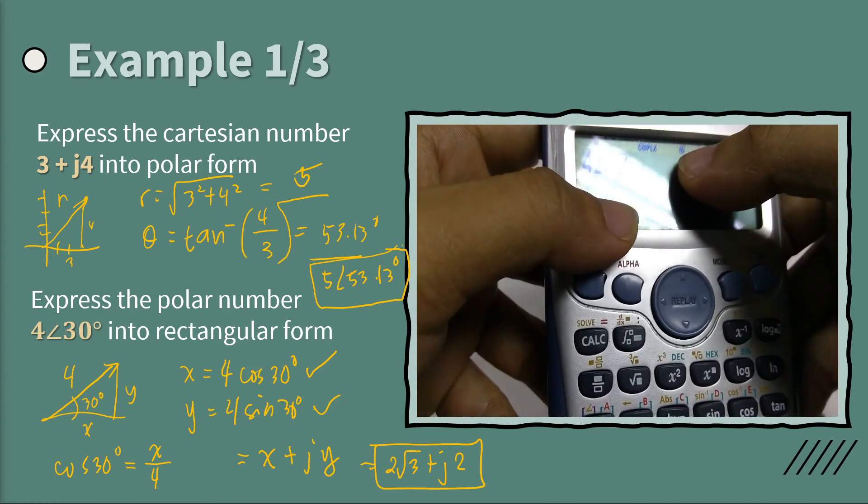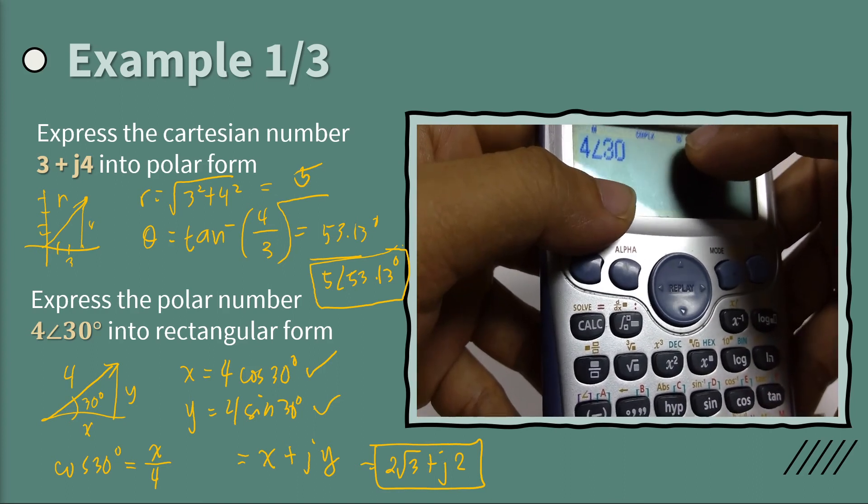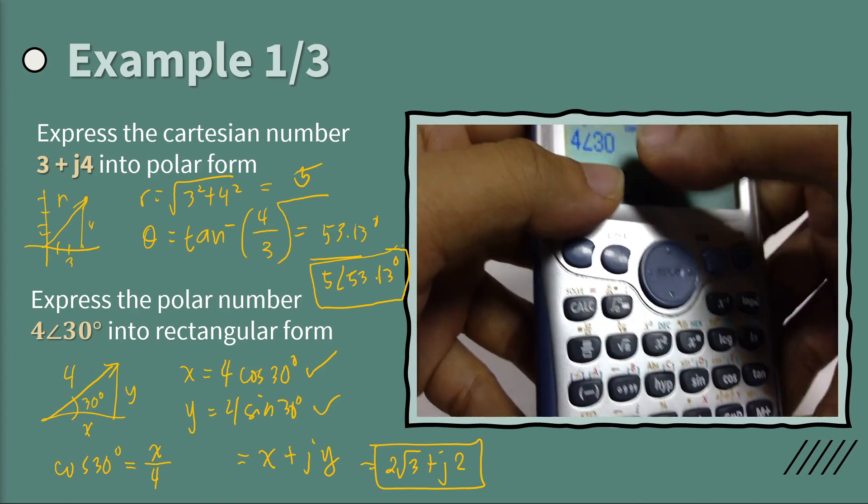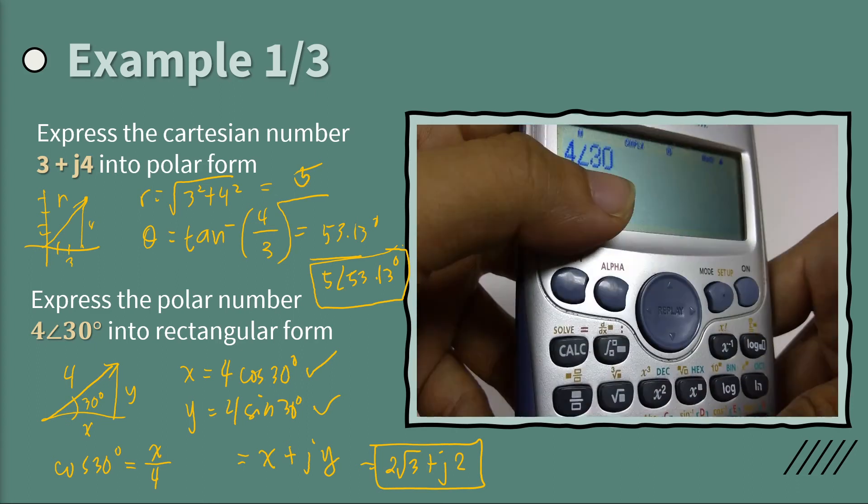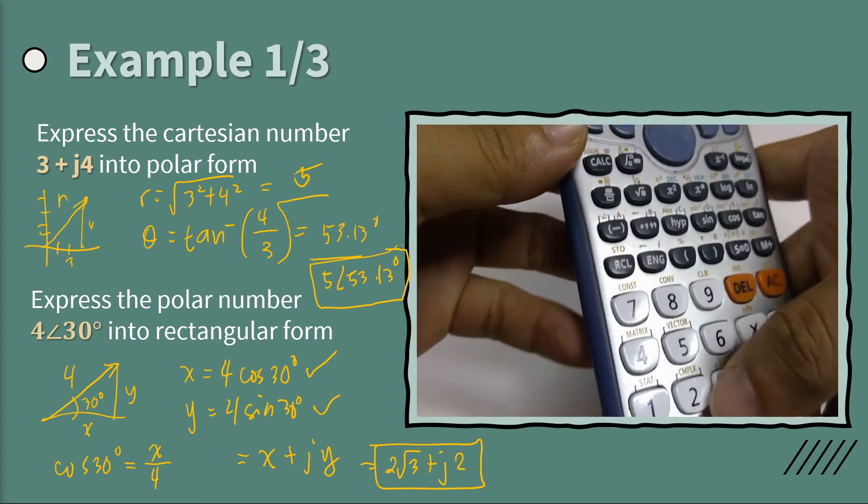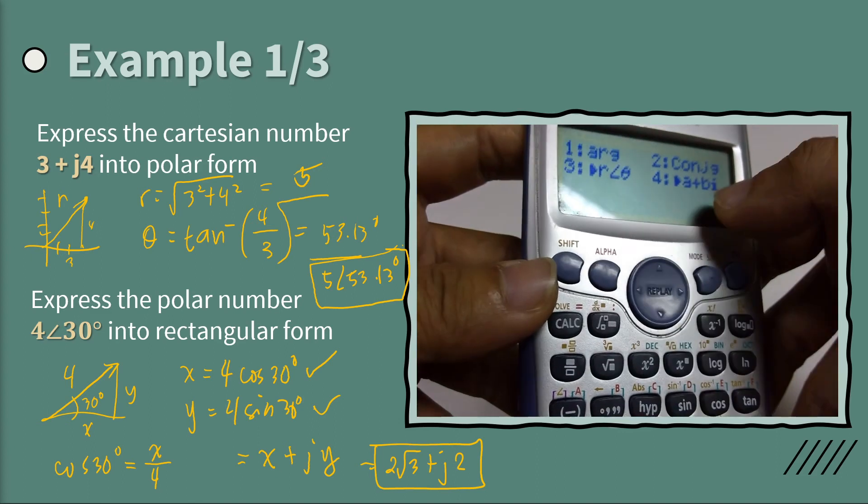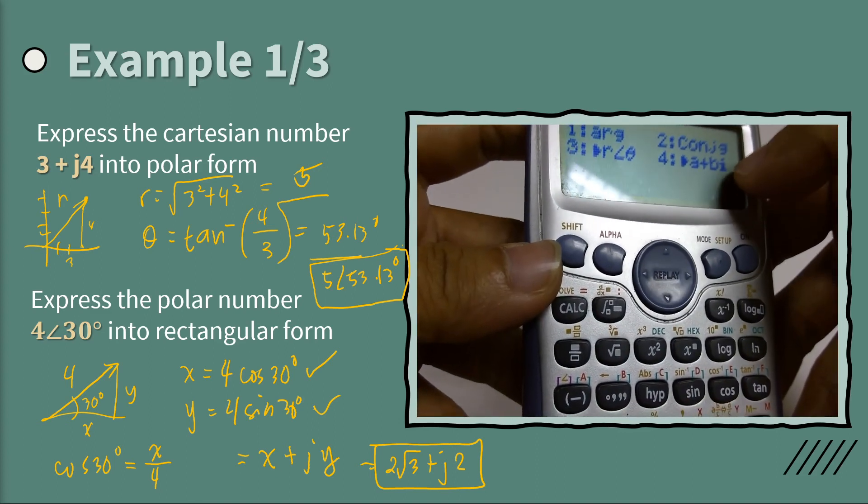Now make sure that your degree is in degrees, not in radians. Otherwise, this is incorrect. So we are supposing that this is at 30 degrees. Then shift again to complex. Find the option of converting it to rectangular, which is number 4.